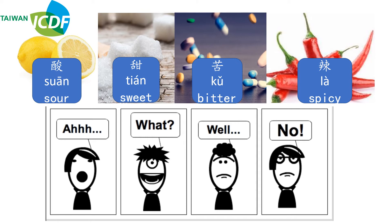Tones are very important. Once you mispronounce, people might misunderstand you. We start from the intonation in English: 啊, what, well, no. And now we apply those tones in Mandarin: 酸，甜，苦，辣. Take a look at the tone marks above the vowels, which stand for the intonations and the pitches.